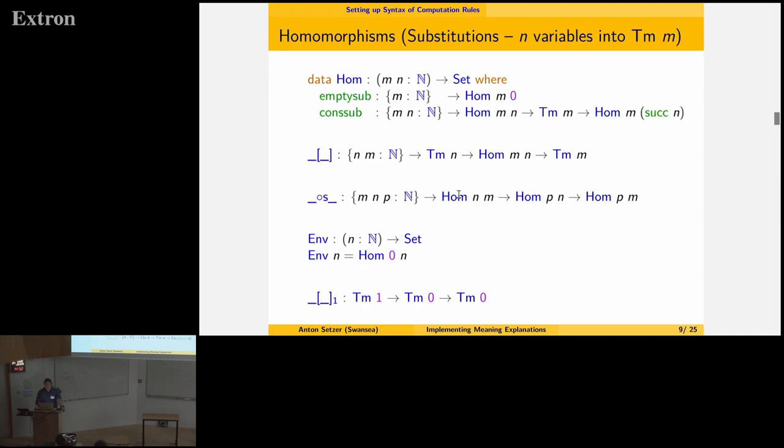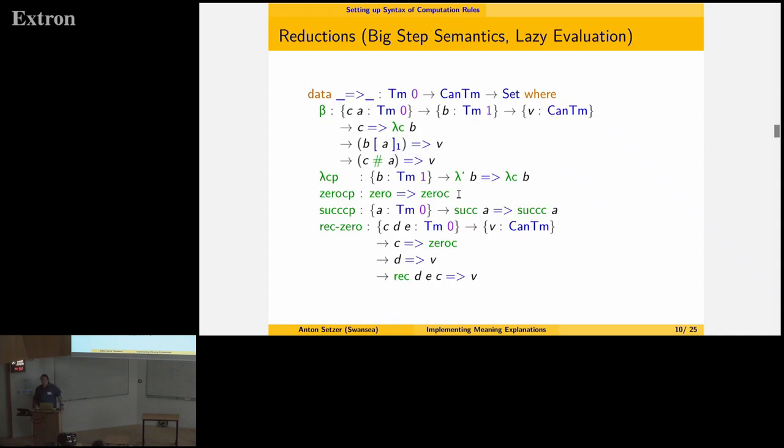And then we have contexts. And this one I want to skip. And now we have reductions. And this follows how Martin-Löf was explaining how these programs are computed. So if you look at beta reduction - when does a term applied to another term reduce to V? This happens if C evaluates to a canonical term. And a canonical term is lambda C applied to some B. And if the B with the variable substituted by A reduces to V, then C applied to A reduces to V. So that's just big step semantics. And lazy evaluation takes place.